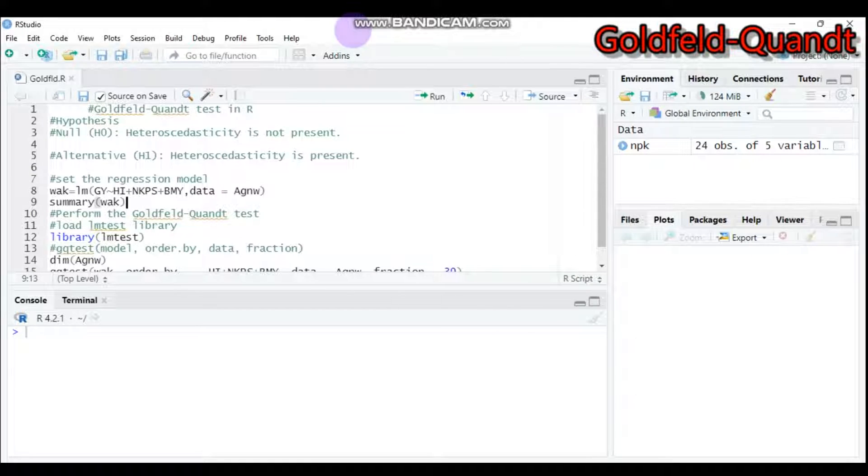Hello everybody and welcome to my channel. Today we're going to discuss the Goldfeld-Quandt test using R software. This test is mostly used for checking heteroscedasticity and is named after two scientists, Goldfeld and Quandt.